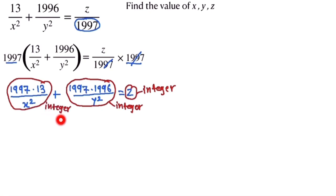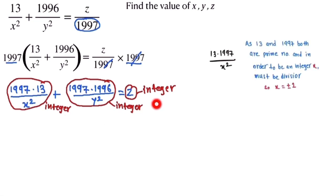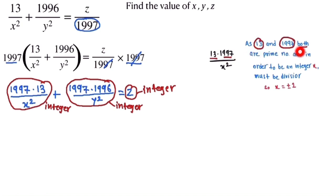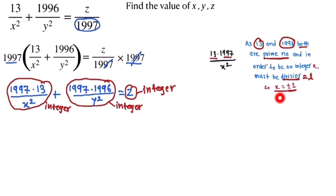We look at the term 1997 × 13 / x². Here 13 and 1997 are both prime numbers, so they can only be cancelled by 1. Therefore x must equal 1, so x = ±1, since it is an integer.